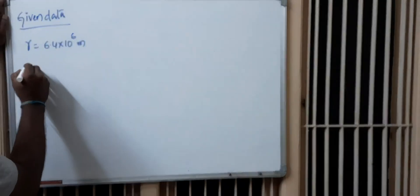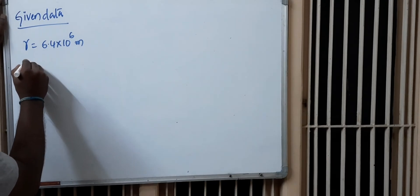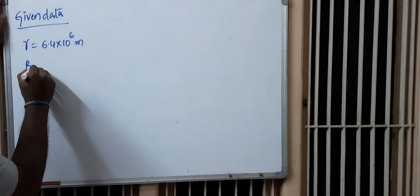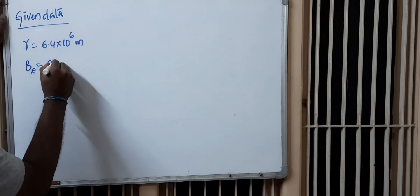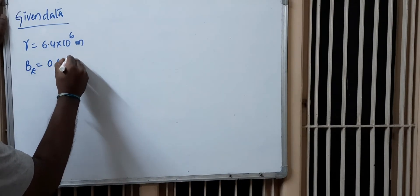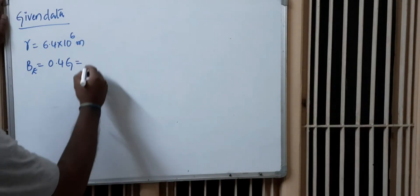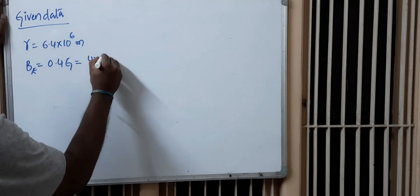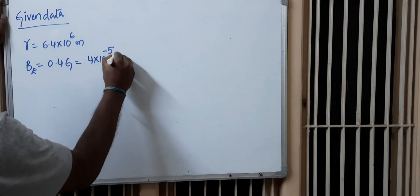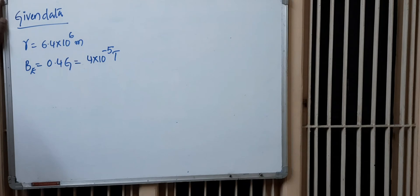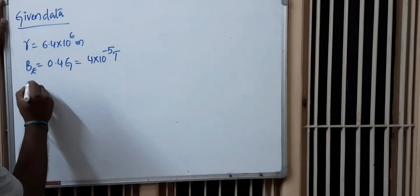They have also given the Earth's magnetic field B = 0.4 Gauss. We have to convert it into Tesla: that is 4 × 10⁻⁵ Tesla. These are the values given to us, and we are working on the equatorial line.